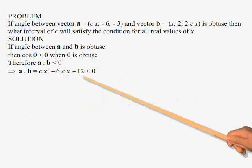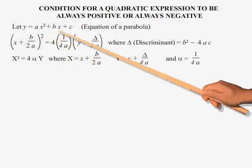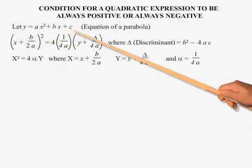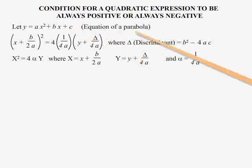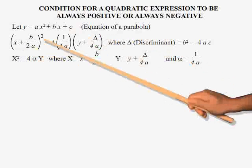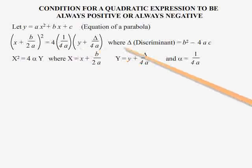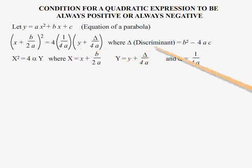This expression is a quadratic of x. We need to know the condition for a quadratic expression to always be positive or negative. Let y equal to ax squared plus bx plus c. The right-hand side is a quadratic expression of x and is the equation of a parabola. The equation is rearranged as: x plus b over 2a, whole square, equals 4 times 1 over 4a times y plus delta over 4a.